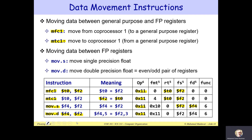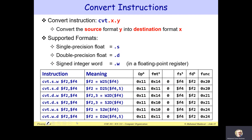In addition to these, we have convert instructions. The question is: how do you add a single precision float to a double precision float? There is no instruction that can add single to double directly. You must use a convert instruction to first convert from single precision to double precision, and then add double to double. This is why convert instructions are needed.